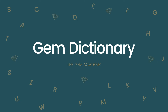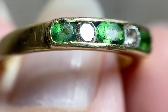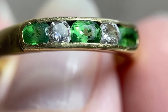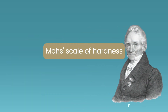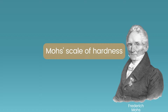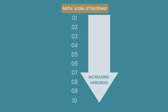Welcome to the Gem Dictionary by the Gem Academy. A gemstone's hardness is most commonly described using the Mohs Scale of Hardness, which was created by mineralogist Friedrich Mohs in 1822. This scale ranks minerals in order of increasing hardness from 1 to 10.